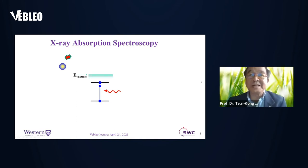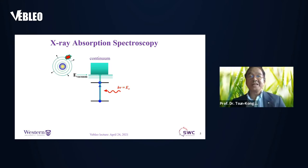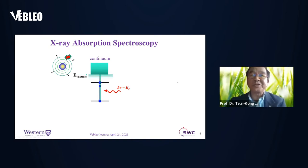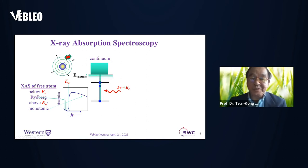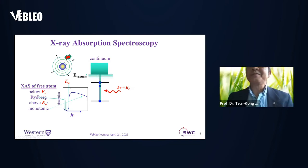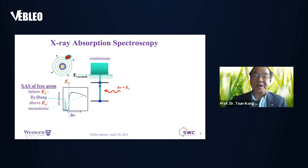If you increase the X-ray energy, you can eventually excite the electron into the continuum, where it can propagate freely. If you track the absorption coefficient of an atom, below the threshold you have some pre-edge transitions, and as you approach the threshold you see an abrupt rise in the absorption coefficient known as the absorption edge. The absorption edge is specific to elements. Above the absorption threshold, you'll see a monotonic absorption coefficient. That's for the free atom.